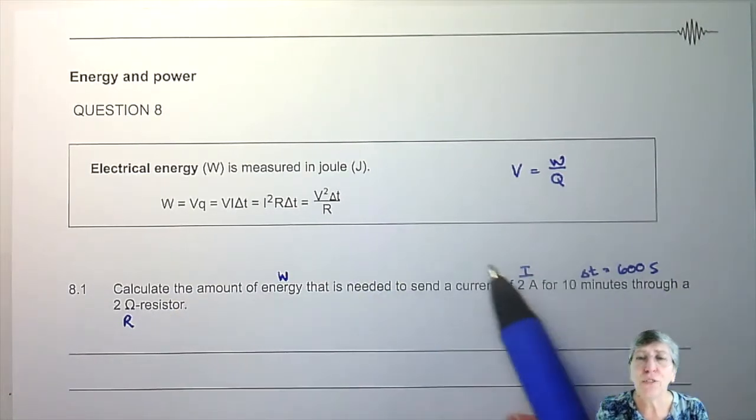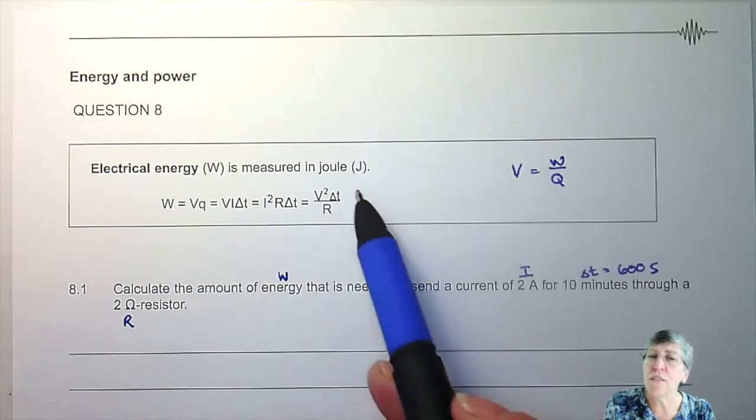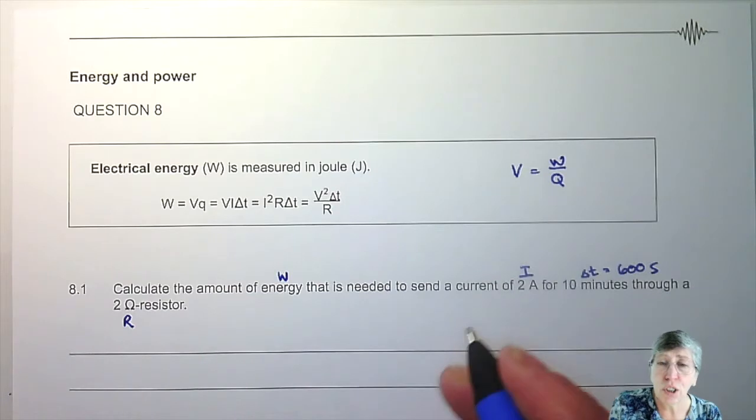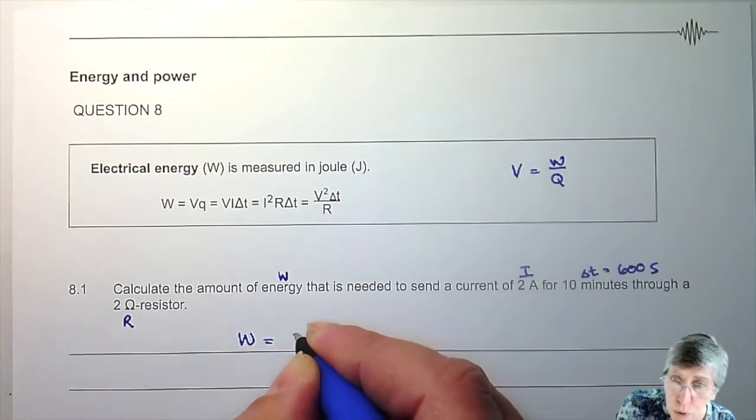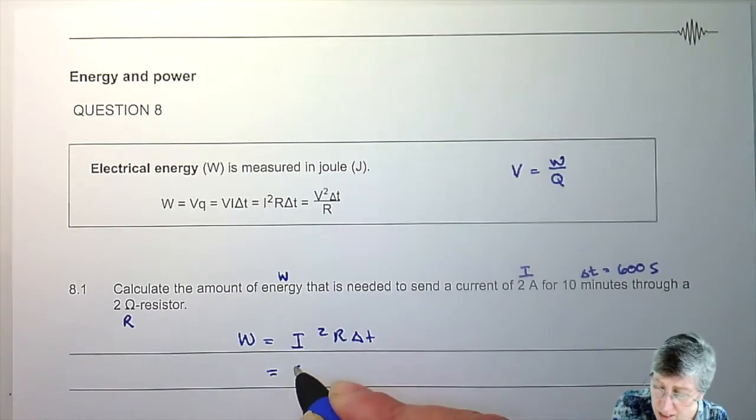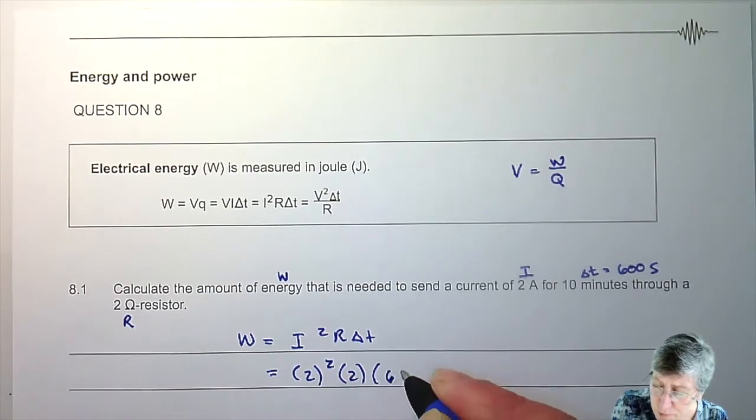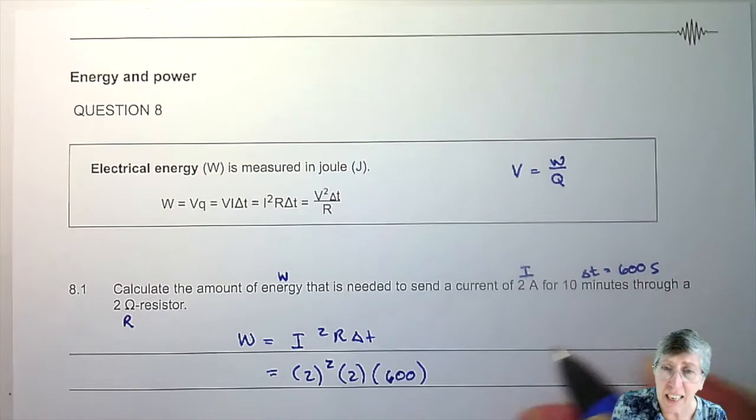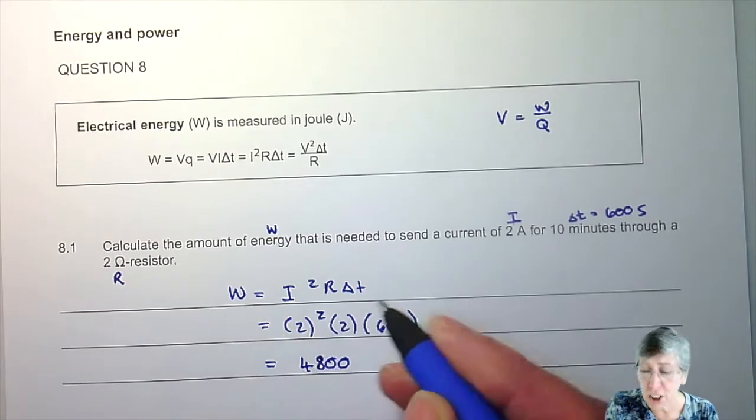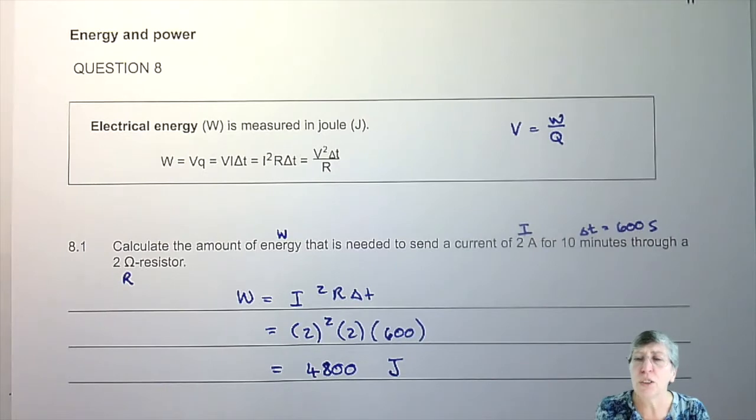Now I just need to find the equation on my information sheet. Remember with the CAPS grade 11 and grade 12 they're going to supply you with those and you just choose the one that's most helpful. So that will be W = I²RΔt, I being 2 ampere, R 2 ohm, and time in seconds. When you do that you end up with 4,800 joule. So that was very easy and that was close to what we've done already.